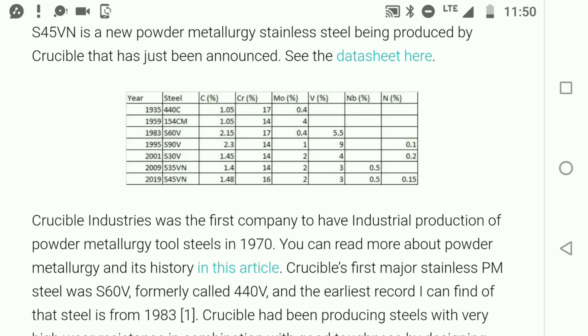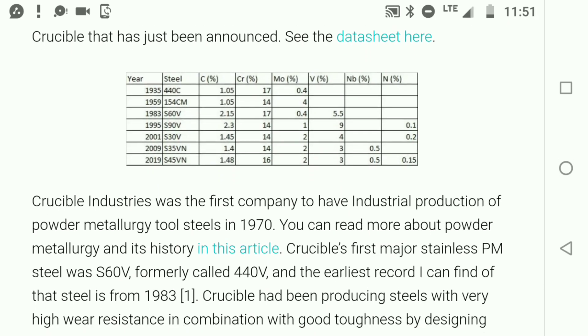What S45VN offers you, in a nutshell, is because we've changed up the chemistry a little bit, it allows us to form more of the structures we want. We're now able to get a finer microstructure, finer carbide structure, and more of the harder carbides we want. People look at this and see 3% vanadium and think that means 3% vanadium carbide. It does not work like that at all.